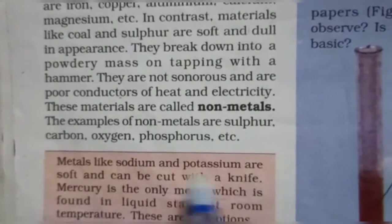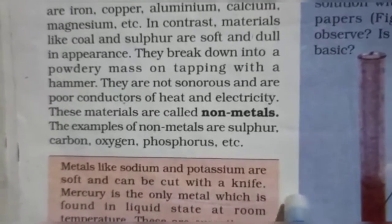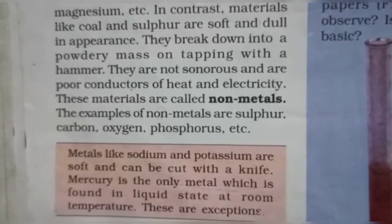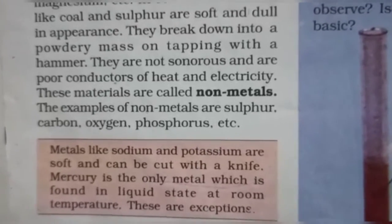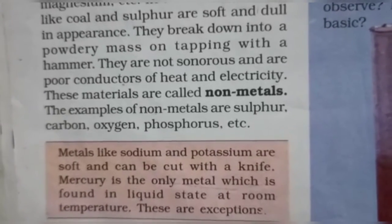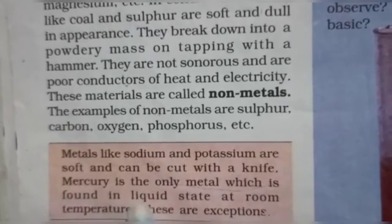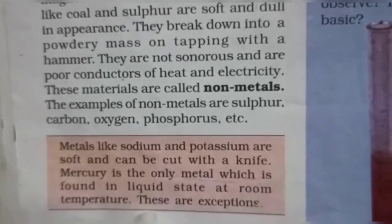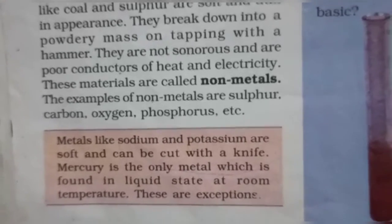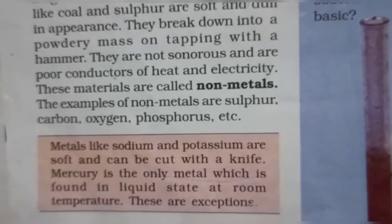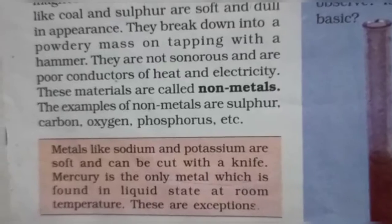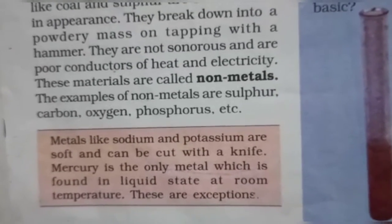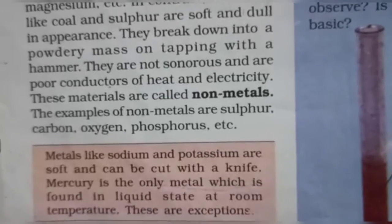Metals like sodium and potassium are soft and can be cut with a knife. Mercury is the only metal which is found in liquid state at room temperature - that is an exception. All other metals are solid.